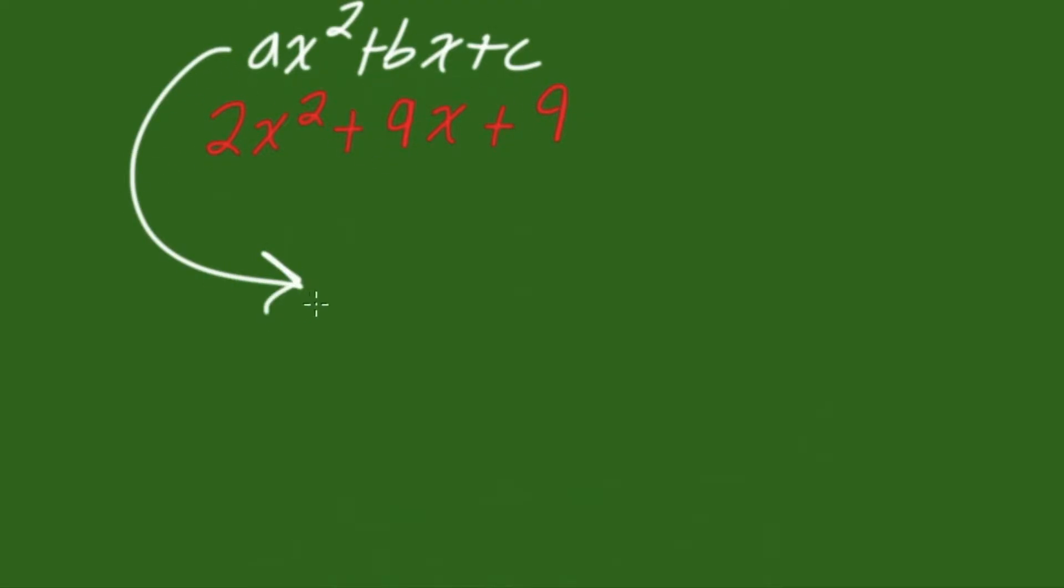It's where a is greater than 1. So when we have this, we can't just factorize it the same way as we would if a was 1. In other words, if we just had x squared plus bx plus c. Now that a is greater than 1, so in our case 2, we have to factorize this a new way.